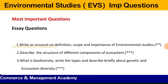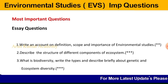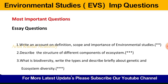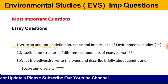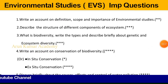Question number three: what is biodiversity? Write the types and describe briefly about genetic and ecosystem diversity. You need to write the definition and types. Mainly, biodiversity is of three types: first, genetic diversity; second, species diversity; third, ecosystem diversity. You have to explain genetic and ecosystem diversity in detail, or they may ask about only species or genetic diversity — so understand the question properly.